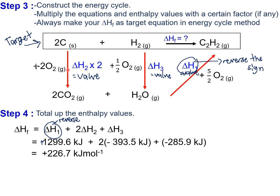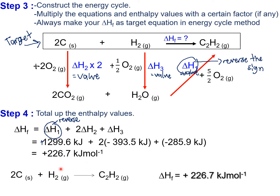When given multiple thermochemical equations, label them so you can keep track — equation 1, equation 2, equation 3. You don't need to figure out whether it's enthalpy of combustion or neutralization; just label them 1, 2, 3. As an additional step, write down the completed target thermochemical equation with the enthalpy change value obtained from the energy cycle method.